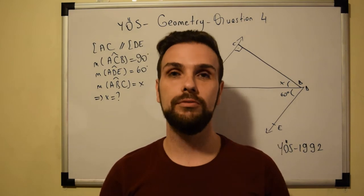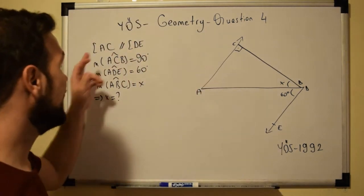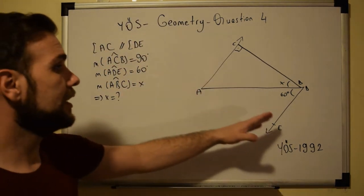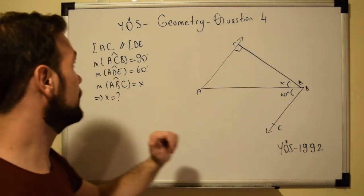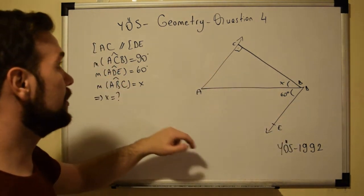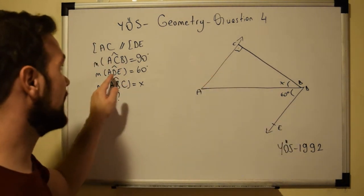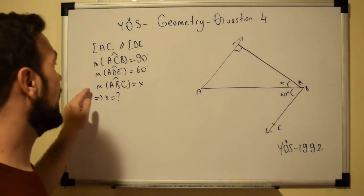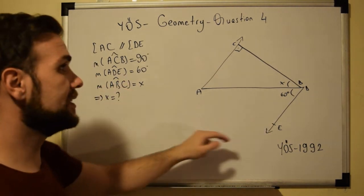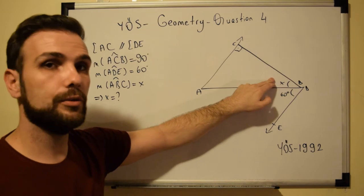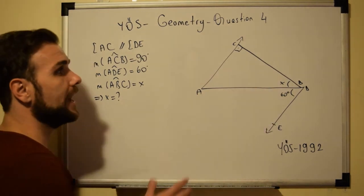Welcome to question number four. In this question, we have AC parallel to DE. We are given angle ACB = 90 degrees, angle ADE = 60 degrees, and we are asked to find the value of angle ABC, which is X.